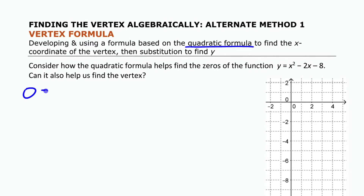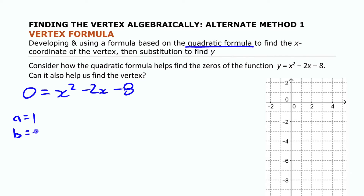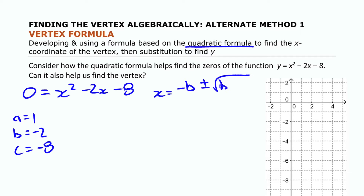To find the x-intercepts we put 0 for y. Then we have a = 1, b = −2, c = −8. We're not going to write too many steps for the quadratic formula. Remember that the quadratic formula is: x = (−b ± √(b² − 4ac)) / 2a.